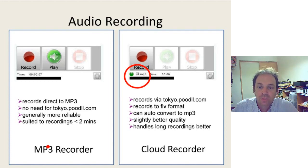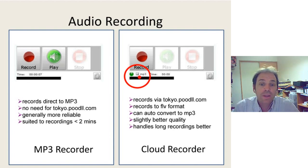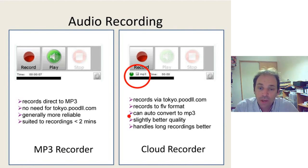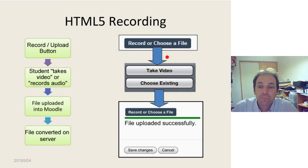I'll explain the difference between the two audio recorders we have in Poodle. We have the MP3 recorder, which is the newer recorder and records straight to MP3 without any need for a Red5 server — you just need your Moodle, no connection anywhere else. It's quite reliable, probably more so than the Red5 server because there's no firewall traversal, and it's generally suited to recordings of shorter length, about two minutes. The other one, the cloud recorder, will auto-convert to MP3 if you check the checkbox. It handles longer recordings well — if you're recording for 25 minutes it's probably a better option, though there is that network hop all the way to Tokyo. Generally I advise people to use the MP3 recorder first; if that fails, try the cloud recorder.